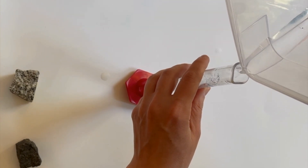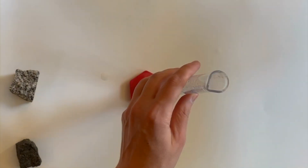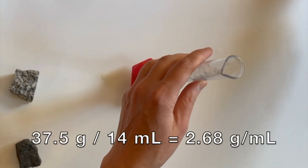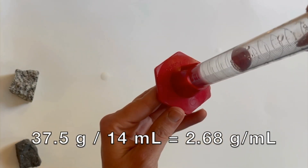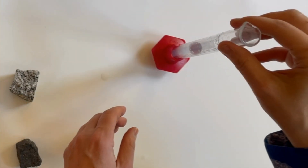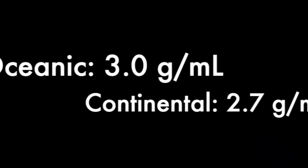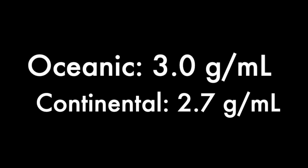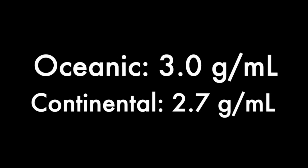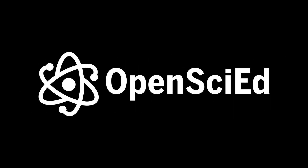This rock is a piece of continental granite, so its density is close to 2.7 grams per milliliter. Because the density values for oceanic and continental rocks are similar, it's very important to measure volume accurately to show that oceanic rocks are more dense.